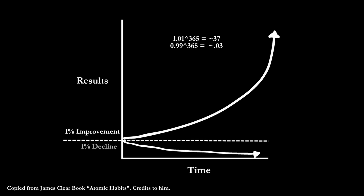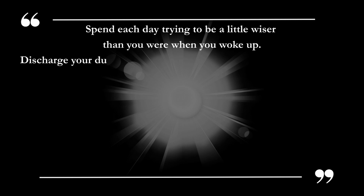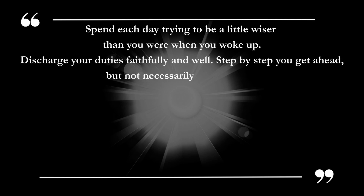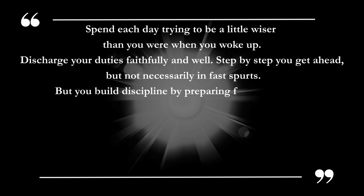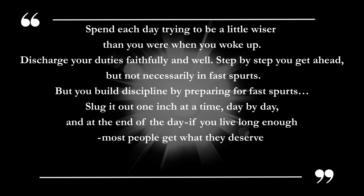James Clear wrote in his book Atomic Habits that in order to get better overall, we should focus on getting 1% better every day. Even a tiny improvement of 1%, done consistently, can lead to something big — you can get 37 times better in one year by only a 1% increase daily. Charlie Munger captures this well: spend each day trying to be a little wiser than you were when you woke up. Discharge your duties faithfully and well. Step by step you get ahead, but not necessarily in fast spurts. Slug it out one inch at a time, day by day, and at the end of the day, if you live long enough, most people get what they deserve.